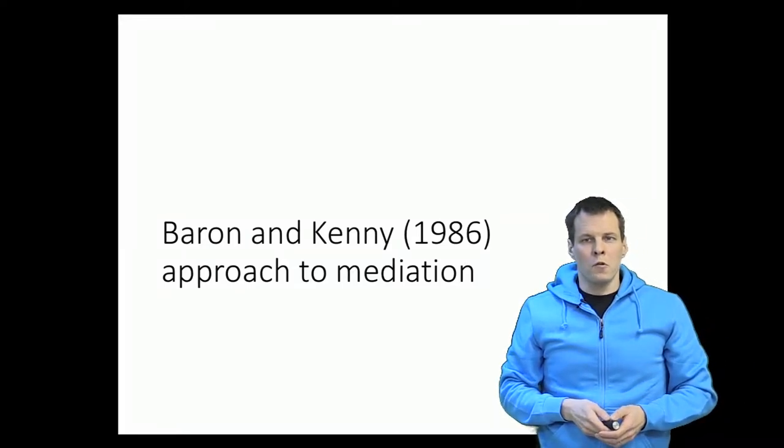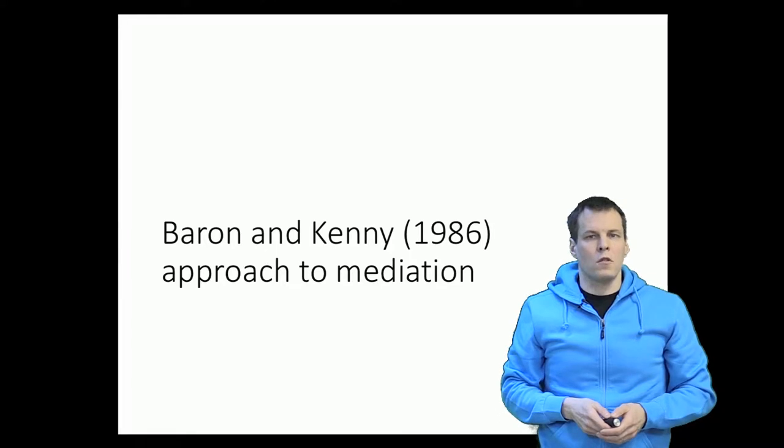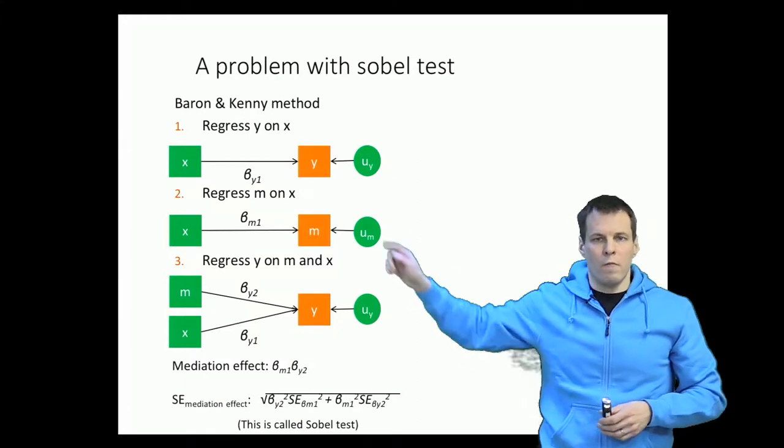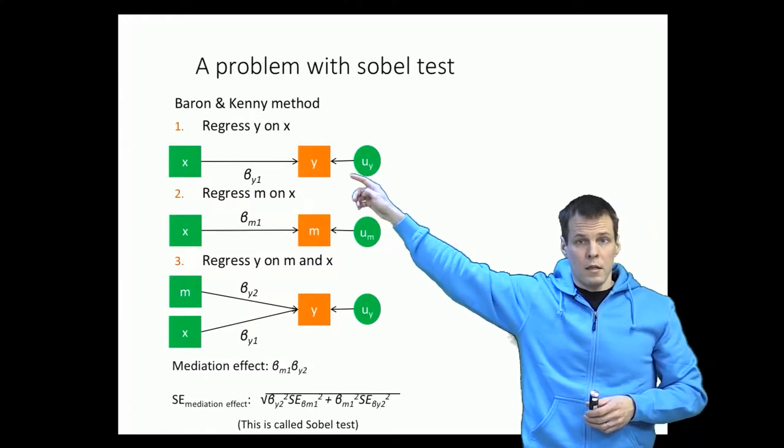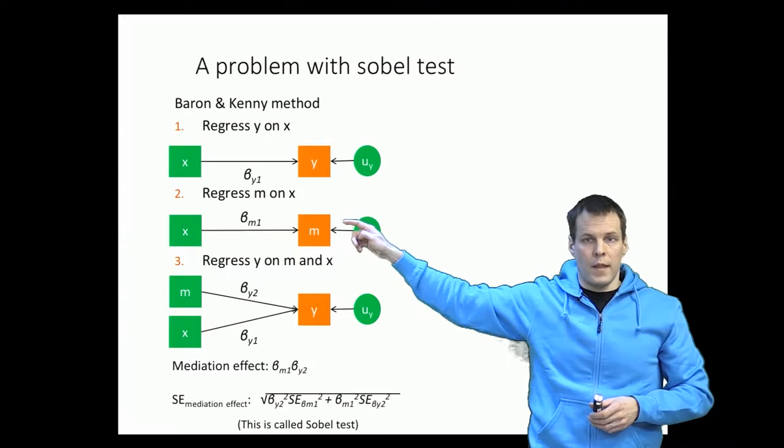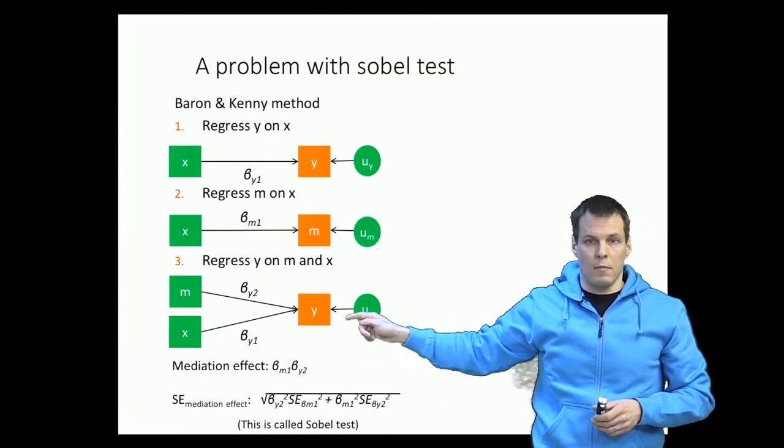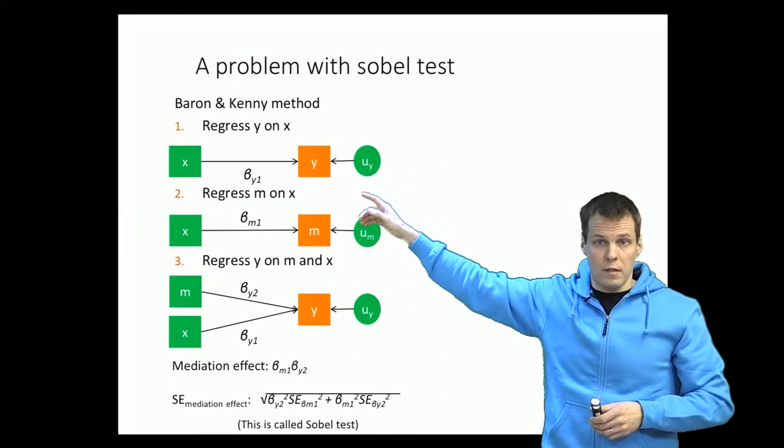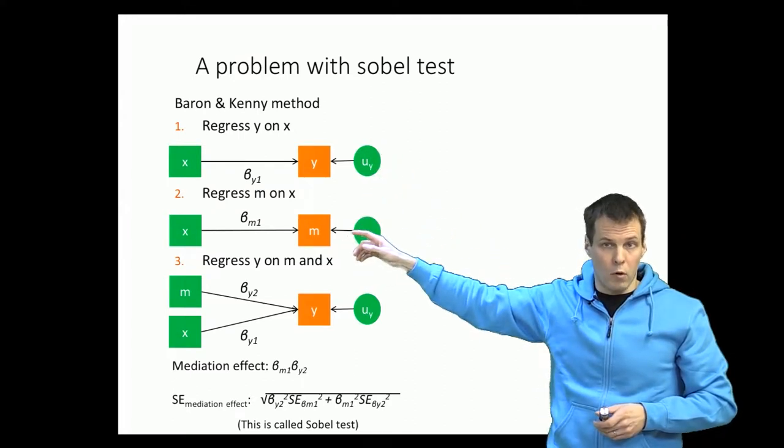In this video I will take a closer look at the Baron and Kenny causal steps approach to mediation. The idea of the Baron and Kenny approach is that we regress y on x, then we regress x on m, and then we regress y on x and m. If all these regressions demonstrate significant relationships, we conclude that there is mediation.